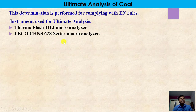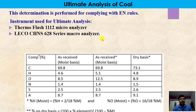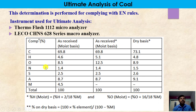Different instruments are used in the ultimate analysis. For your knowledge, the Thermo Flash 1112 Microanalyzer and LECO company's CSNS 628 series Macroanalyzer are used to determine the ultimate analysis. In the table shown here, one example of an ultimate analysis report is given on an as-received moist basis and a dry basis. In the as-received moist basis, the hydrogen and oxygen of the moisture are taken into account in the hydrogen and oxygen parts. The dry basis gives a moisture-free sample basis.